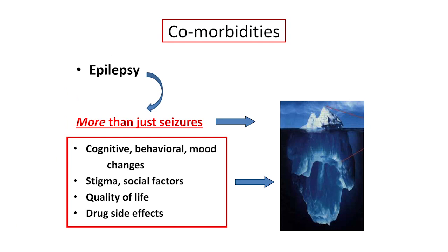Very important is comorbidities — a term reflecting the fact that epilepsy is not just seizures but many more clinical problems that go along with it. If epilepsy was the tip of the iceberg above the water, below the water would be all the comorbidities: the cognitive and mood disorders, social factors that stigmatize epilepsy, quality of life impaired when a child has seizures frequently, and drug side effects. Comorbidities are sometimes even more critical for the child's lifestyle than the seizures themselves.